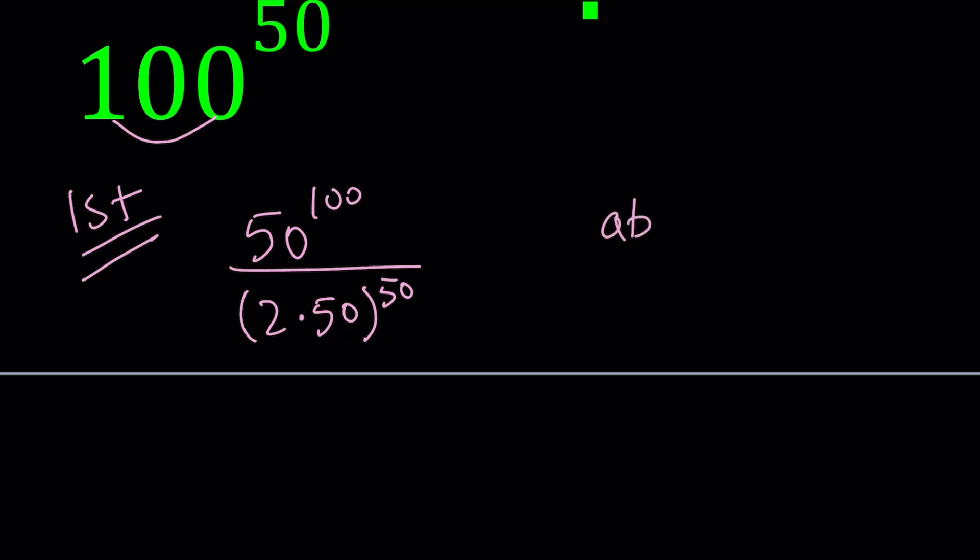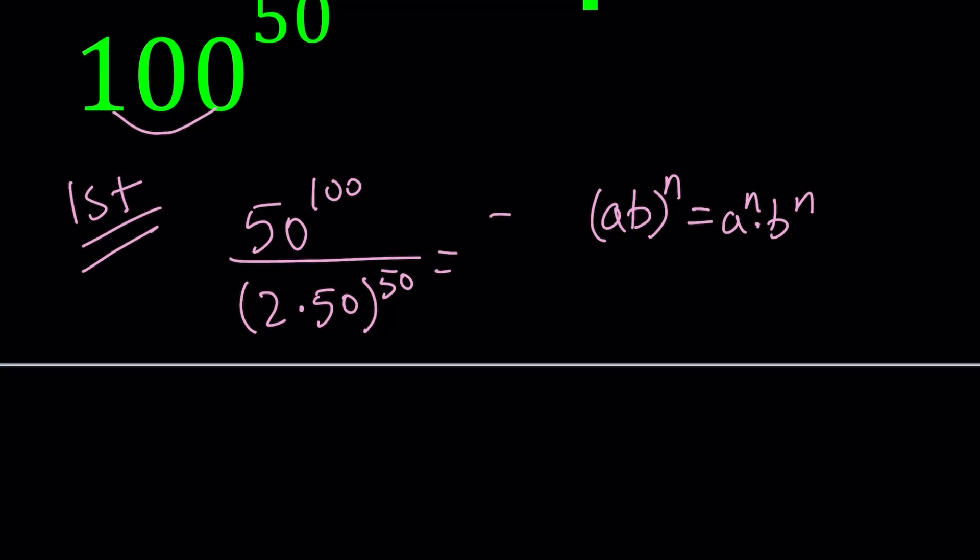Now, we have a rule for exponents, especially for positive bases. When you have something like a times b to the power n, you can write it as a to the n times b to the n. Now we can go ahead and apply that property.